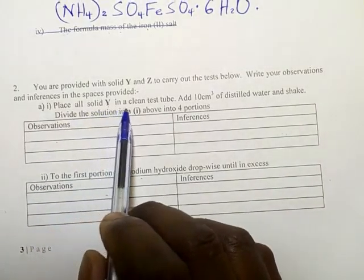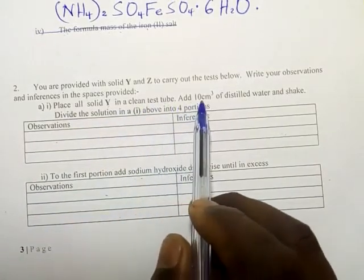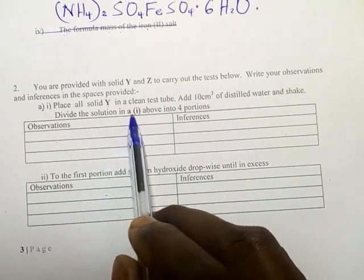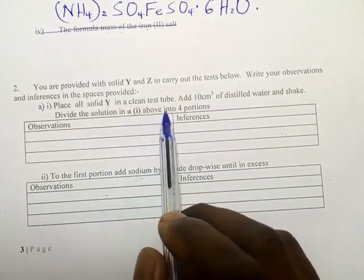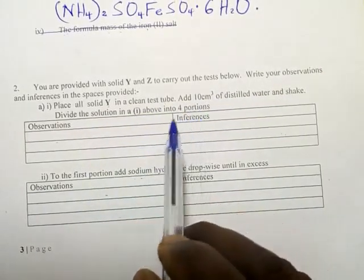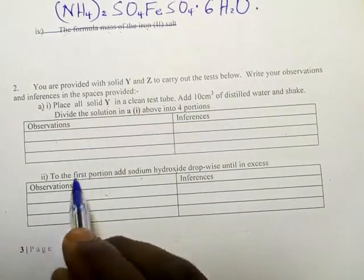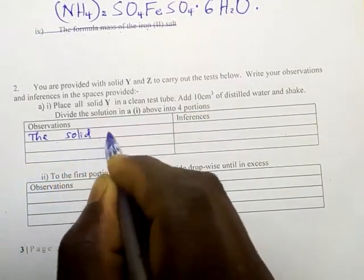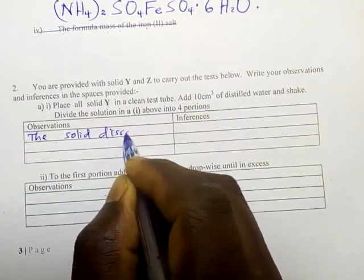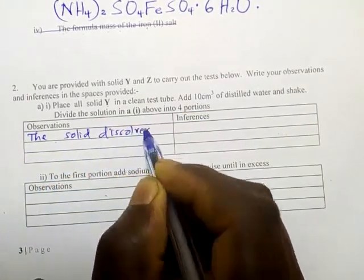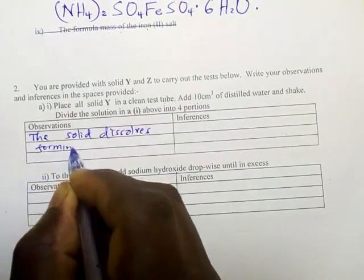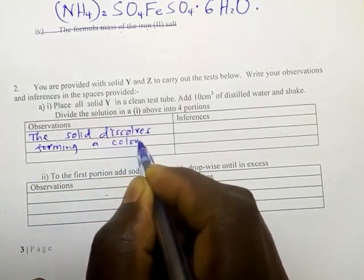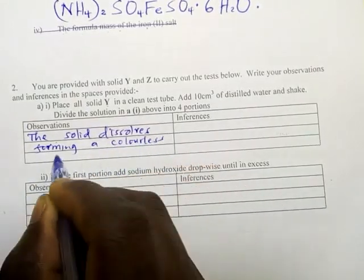Place all solid Y in a clean test tube. Add 10 centimeters cube of distilled water and shake. Divide the solution in A1 above into four portions. So we want to see, did the solid Y dissolve? Yes. So the solid dissolves, forming a colorless solution.